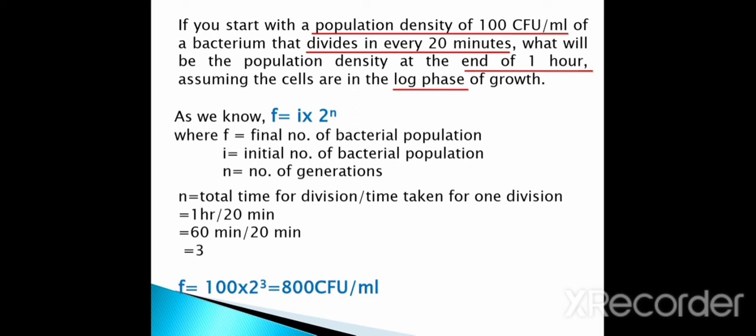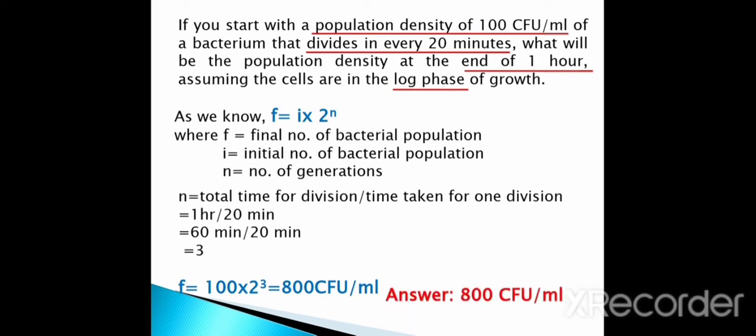If you know the total time for division and the time taken for one division, you can easily calculate the number of generations. Next, we calculate the population density: F = 100 × 2^3 = 100 × 8 = 800 CFU per ml. So the population density at the end of one hour will be 800 CFU per ml.